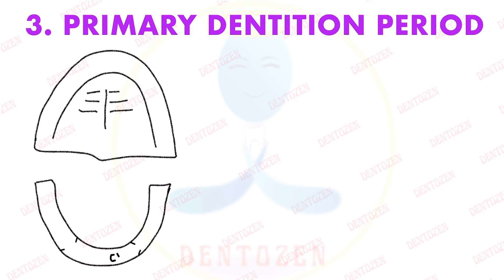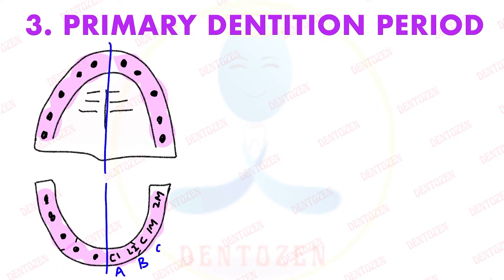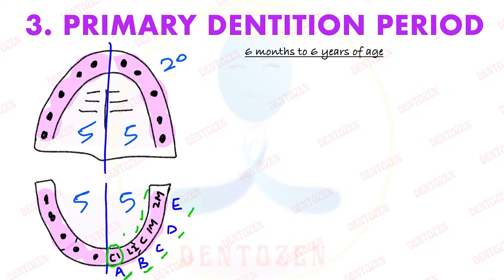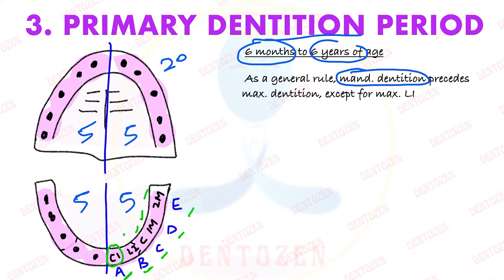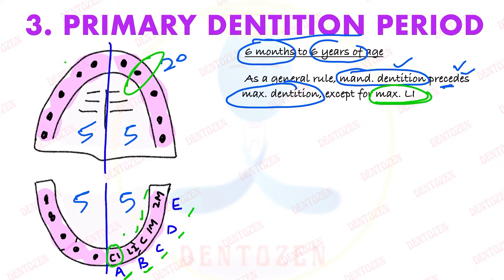The primary dentition period starts with the eruption of the first primary tooth — the central incisor. Along with that we have lateral incisor, canine, first molar, and second molar, denoted by alphabets A, B, C, D, and E respectively. There are five primary teeth in each quadrant, totaling 20 teeth, remaining in the mouth until six years of age. As a general rule, mandibular primary teeth precede maxillary primary teeth, with the exception that maxillary lateral incisors erupt before mandibular lateral incisors.